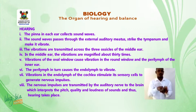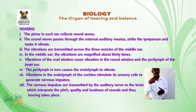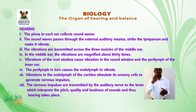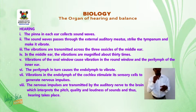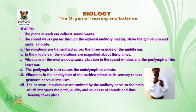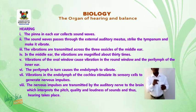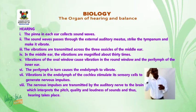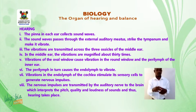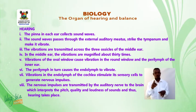Five, the vibrations at the oval window cause vibrations in the perilymph of the inner ear. Six, the perilymph in turn causes the endolymph to vibrate. Seven, vibration in the endolymph of the cochlea stimulates its sensory cells to generate nervous impulses. Lastly, the nervous impulses are transmitted by the auditory nerve to the brain, which interprets the pitch, quality, and loudness of sounds. And thus, hearing takes place.